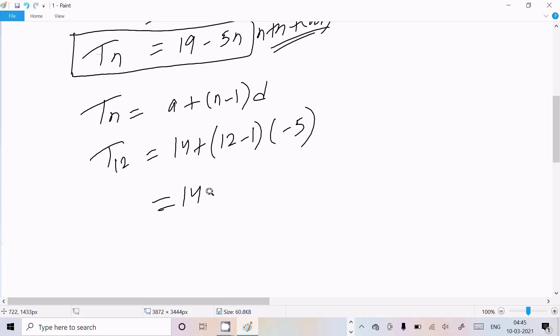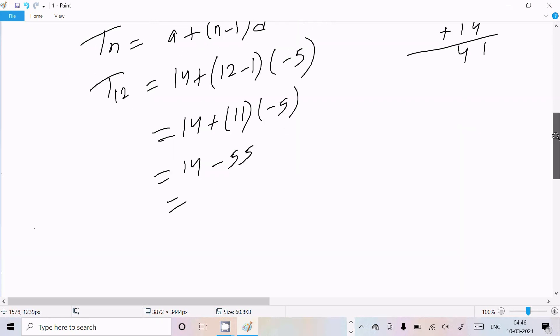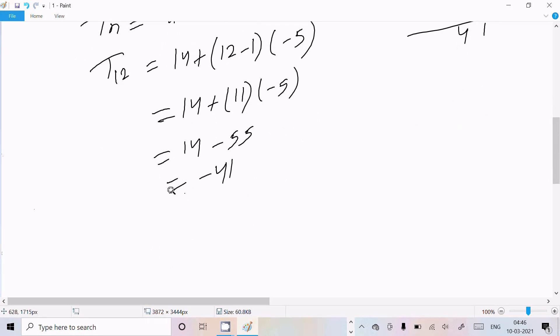Now solve this. So here this is 14, now 12 minus 1 that comes 11, and here this is minus 5. 14, 11, minus 5 that comes minus 55, so if you subtract this 55 and 14, this comes 41, so here minus 41 is the 12th term.